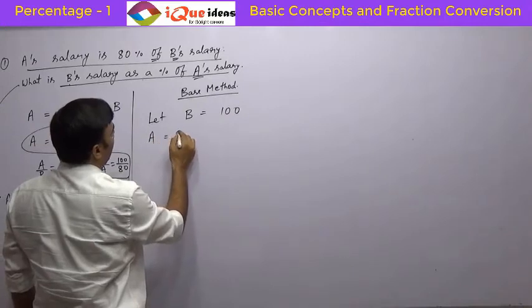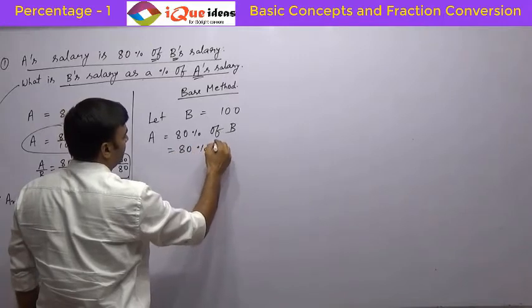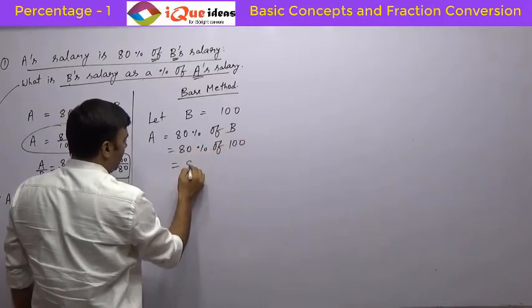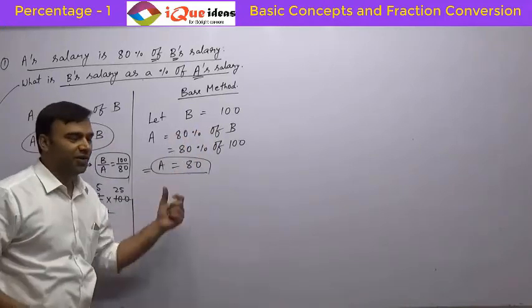So A will become 80% of B. That means 80% of 100. That means it is equal to 80. You can directly write this, without writing all this, you could have said A is equal to 80.